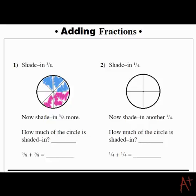And the question asks, how much of the circle is shaded in? At this point, 3 plus 3 is 6, so we have 6 eighths shaded in. Then the actual question shows up: 3 eighths plus 3 eighths equals, and from the work above, it's obvious that the answer is 6 eighths.